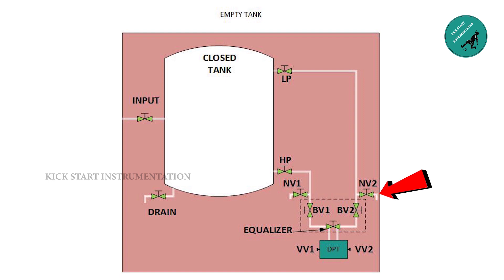This is needle valve 1, which drains the process from SS tube of high pressure. This is needle valve 2, which drains the process from SS tube of low pressure. Block valve 1, block valve 2, and equalizer valve are three valves of three-way manifold.